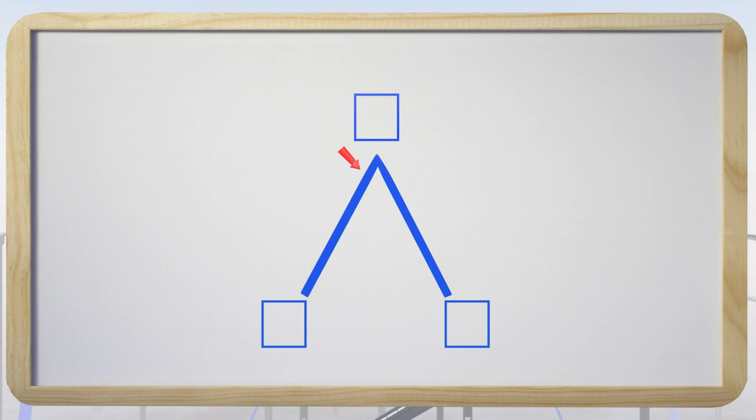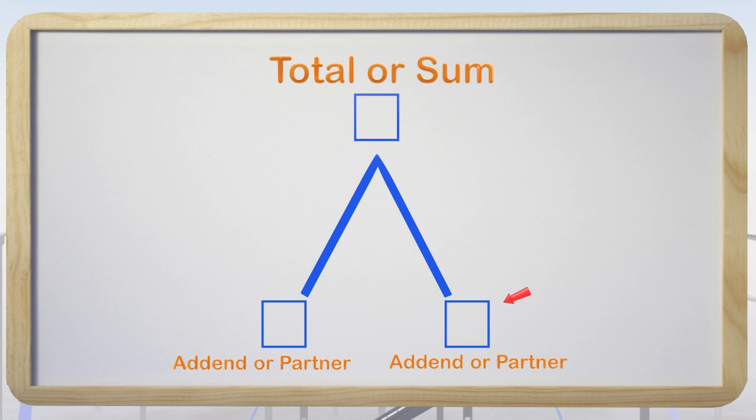We have three parts here. The top part of the mountain is called the total. It is also called the sum as well. The two parts on the bottom of the mountain are called addends. Another name given to them is partners, but it is the same thing. The sum always gets put on the top. The sum gets separated or divided into two parts which are the addends.